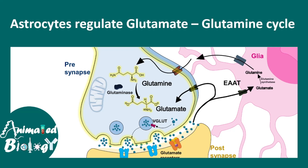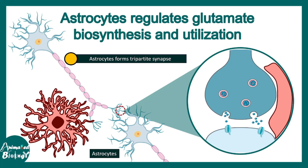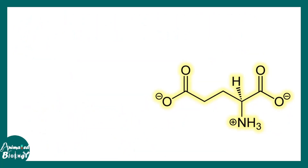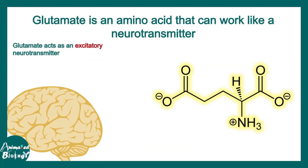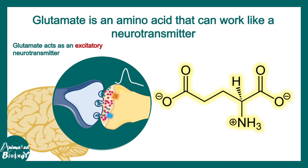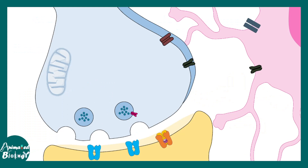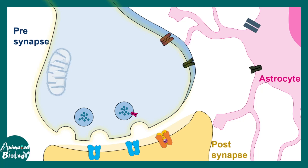Let's talk about how astrocytes regulate the glutamate-glutamine cycle at the synapse, because the astrocyte's key role is to form the tripartite synapse — that means one neuron synapsing with another, and the astrocyte being the third component. Glutamate is one of the major neurotransmitters in the vertebrate brain; it is an excitatory neurotransmitter, meaning it leads to an excitatory change in the post-synapse. Here is a zoomed-in view of a glutamatergic synapse — this is the pre-synapse, this is the post-synapse, and this is the astrocyte forming the third component of the tripartite synapse.